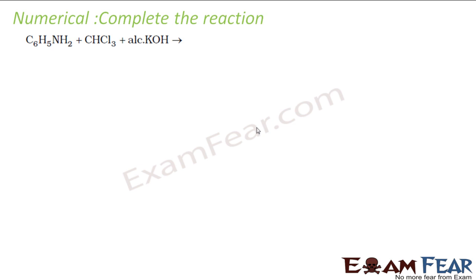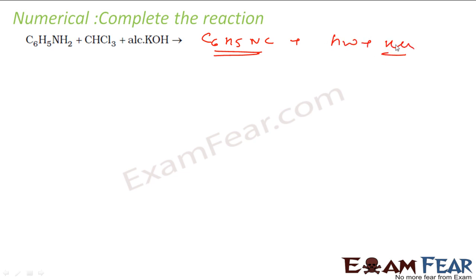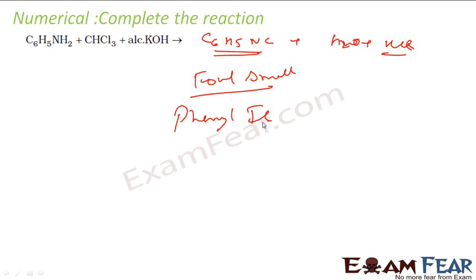The next reaction: C6H5NH2 (aniline) reacts with CHCl3 in alcoholic KOH — this is the carbylamine reaction. It will form isocyanide: C6H5NC, that is phenyl isocyanide, which is a foul-smelling compound, along with water molecules and KCl. We have seen this reaction mechanism as well.